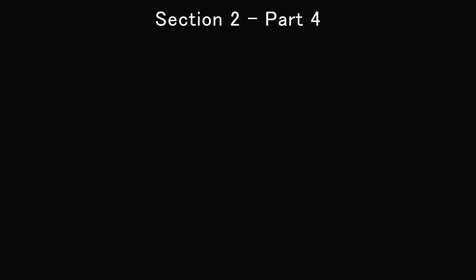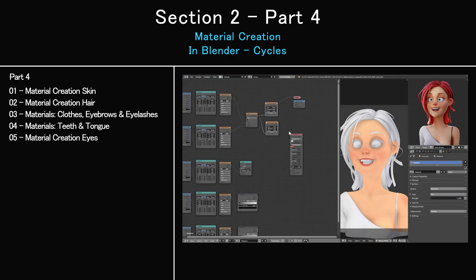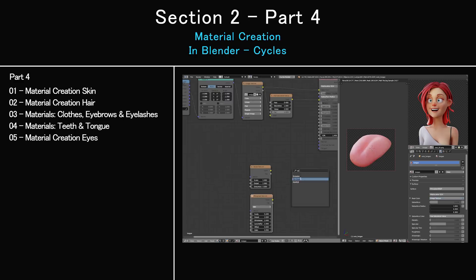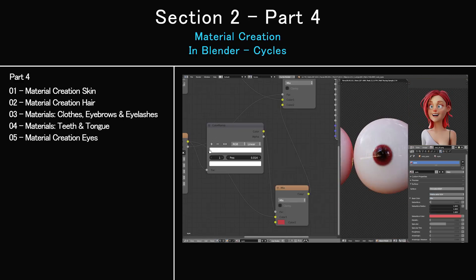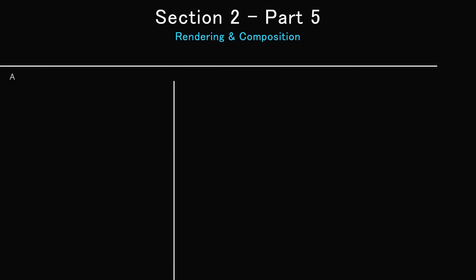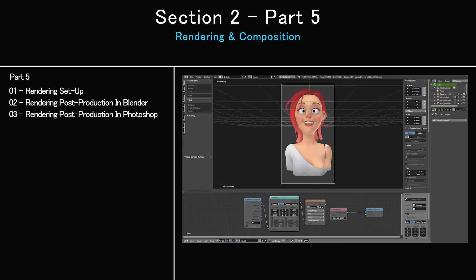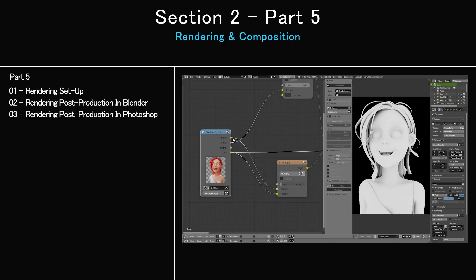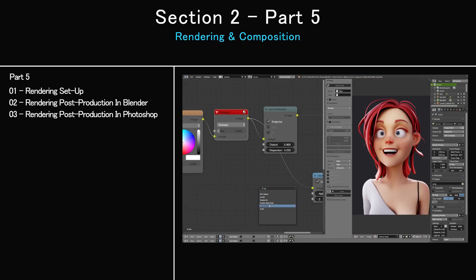Part 4 is a 5-part video where I will show you how to create materials in Cycles for our character's skin, hair, clothes, and eyes with help of the textures that we made. This will get us ready for the final rendering. Part 5 is a 3-part video where I will take you through setting up your Blender scene for rendering in Cycles. I will also show you some post-production methods in Blender and Photoshop as a bonus alternative way to do your final composition.